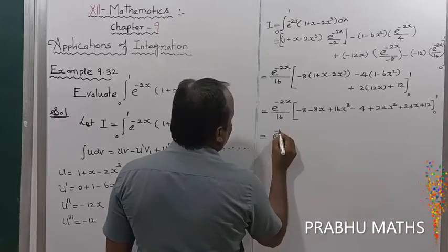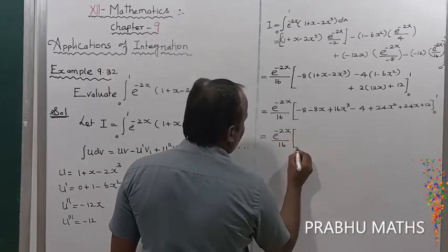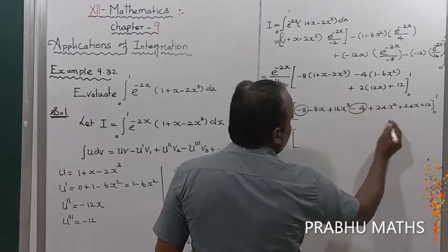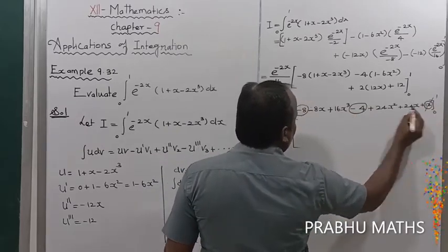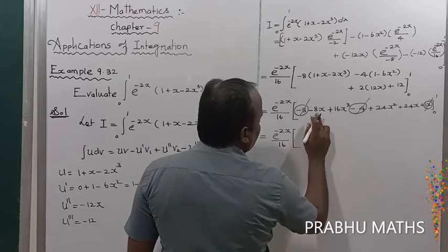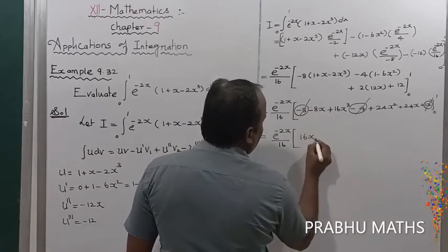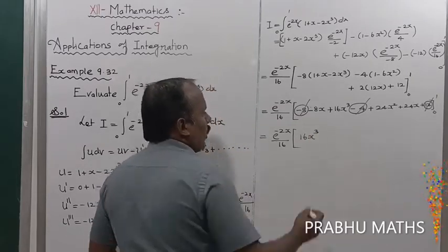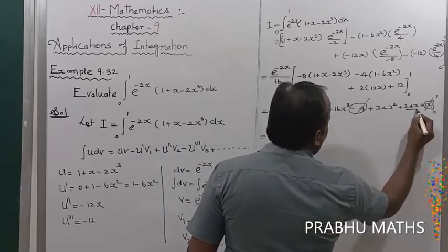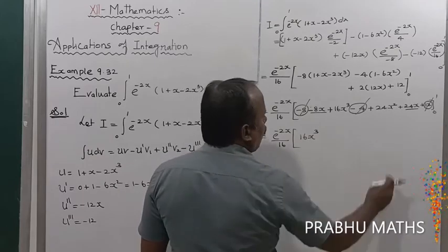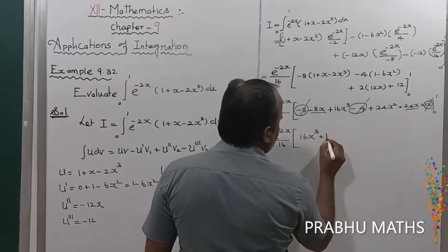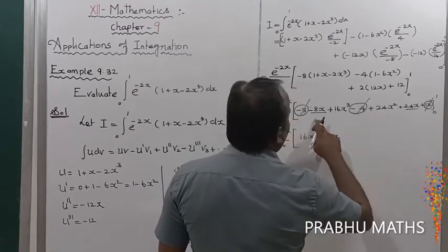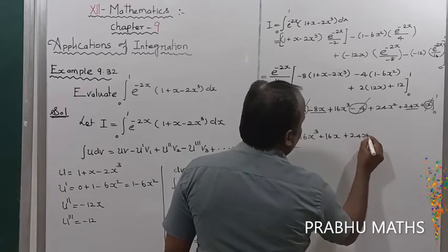Simplifying inside: -8 - 4 = -12, and +12 cancels it fully. The remaining terms are 16x³ + 24x² + (-8x + 24x) = 16x³ + 24x². So the expression is e^(-2x)/16 into (16x³ + 24x²), with limits 0 to 1.